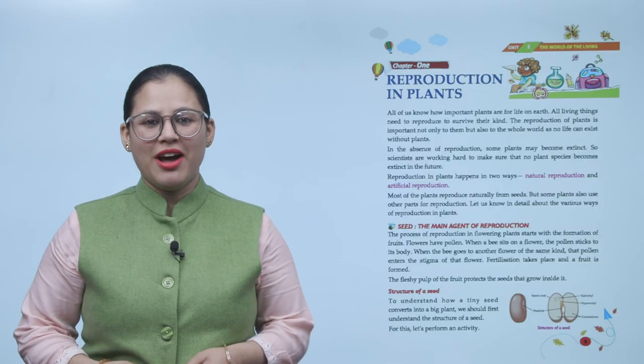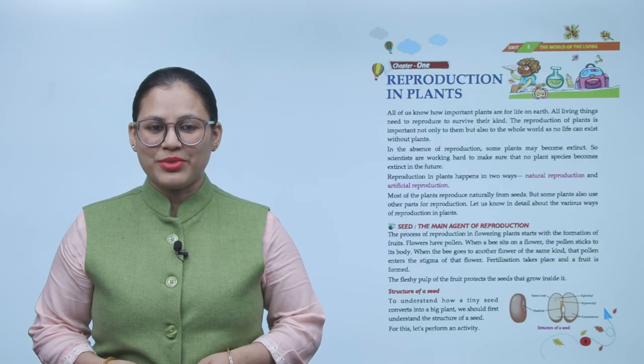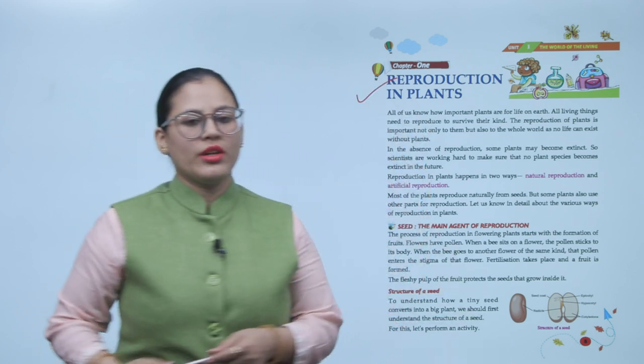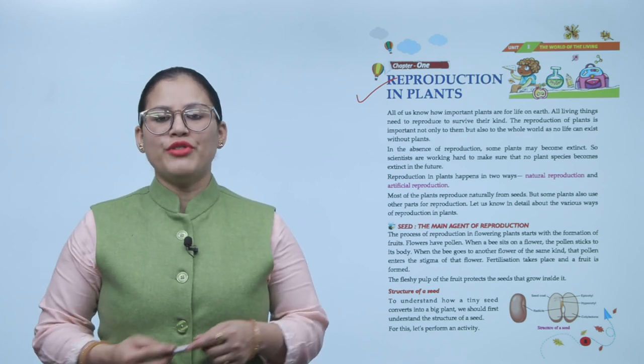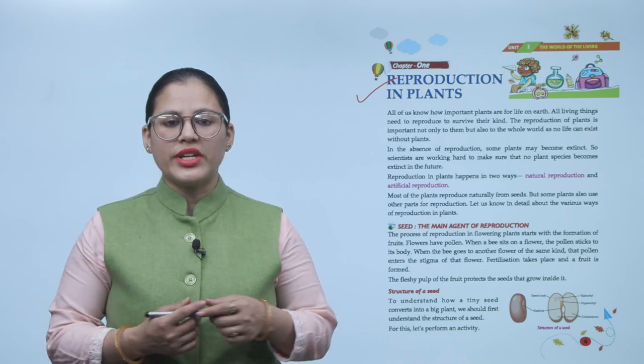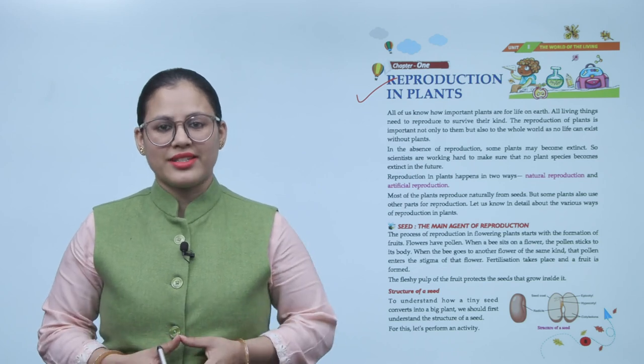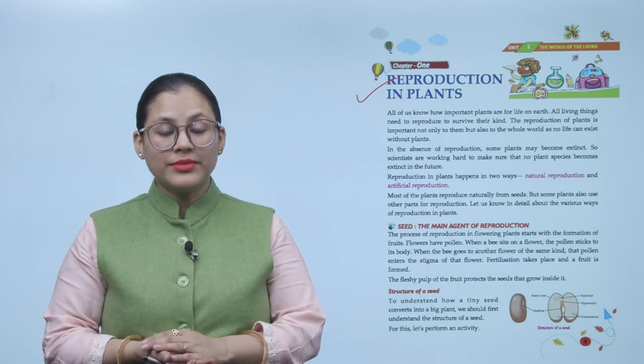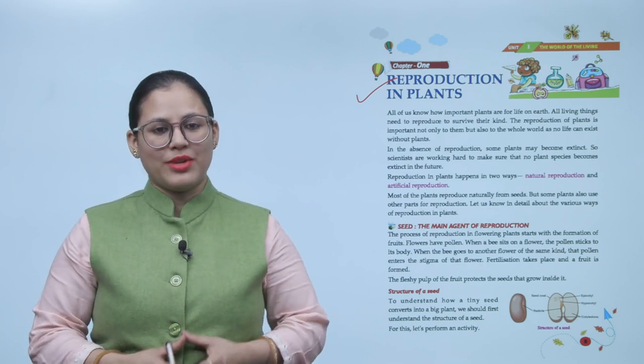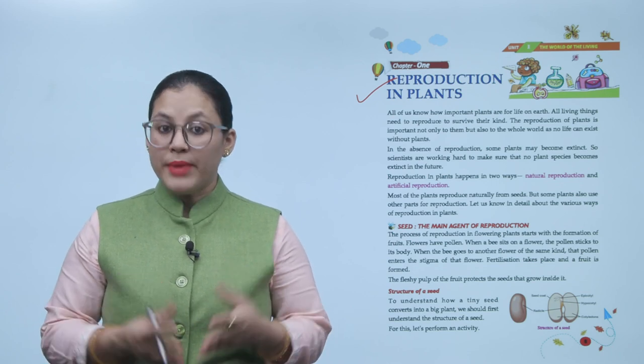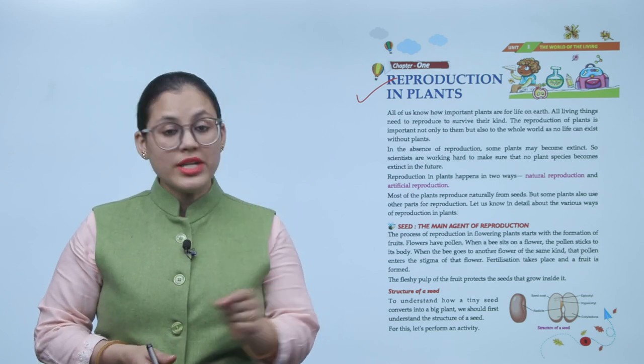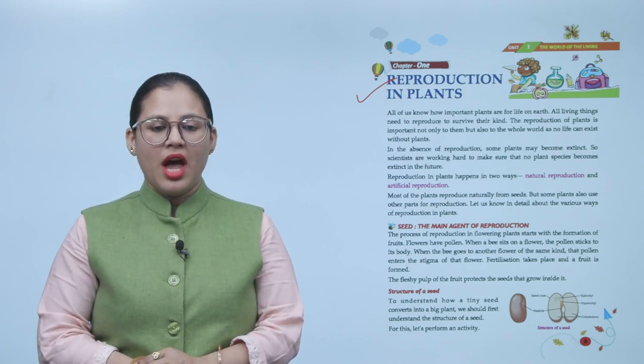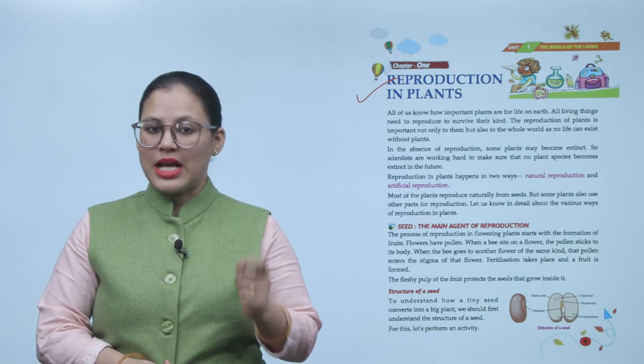Hello students, I hope you all are doing good. Let's start today's chapter reproduction in plants. All of us know how important plants are for life on earth. All living things need to reproduce to survive their kind. The reproduction of plants is important not only to them but also to the whole world, as no life can exist without plants. In the absence of reproduction, some plants may become extinct, so scientists are working hard to make sure that no plant species becomes extinct in the future.